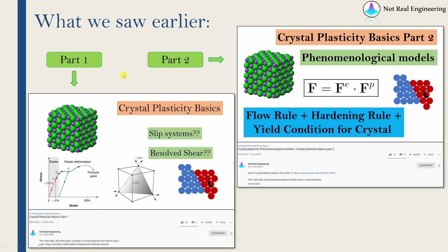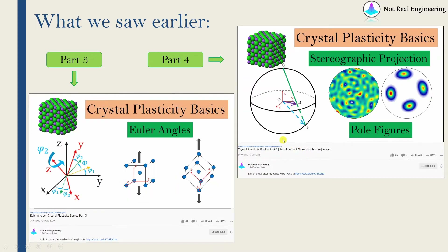If you did not see earlier parts, all the links are in the description box below. In part 1, we started with some basic concepts of crystal plasticity. In part 2, we saw phenomenological models used in crystal plasticity. In part 3, we talked about Euler angles. And in part 4, we talked about stereographic projections and pole figures.